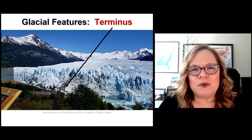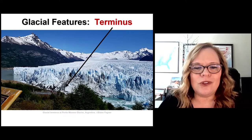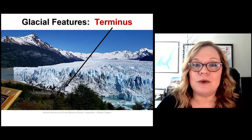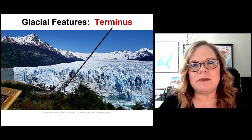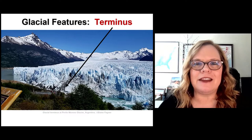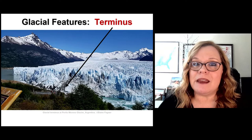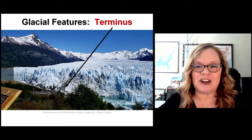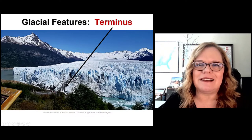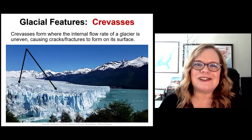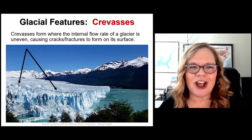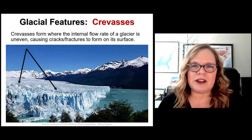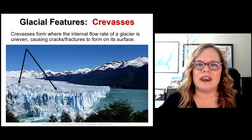The terminus — the toes — of Perito Moreno glacier in Argentina. My husband gave me a gift to do a virtual visit to this location, which was really cool. This is a great look at the terminus: where the glacier is wasting, and you see all these icebergs — definitely examples of ablation. Crevasses are another feature you'll see in any type of glacier, whether valley or continental. They form when the internal flow rate of a glacier is not consistent or even, causing cracks and fissures on its surface.